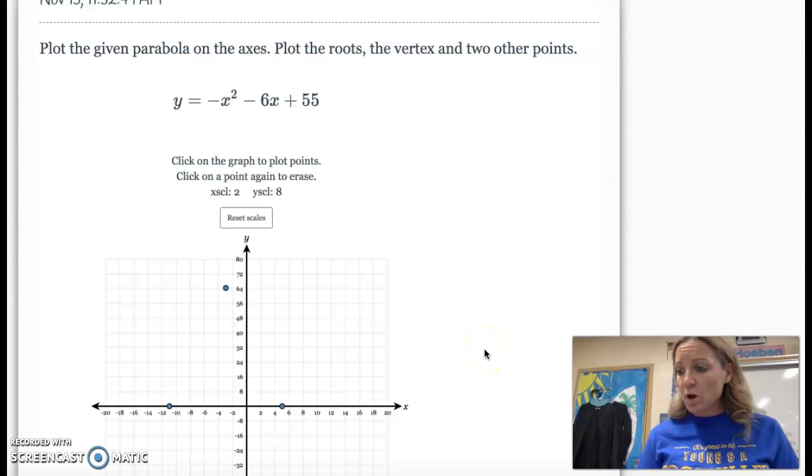And then we need any two other points. So the easiest one for me was zero because it's so easy to multiply by zero. So zero squared is zero. Six times zero is zero. And so when you take zero and add 55, you should get 55. So we should have a point at 0, 55.